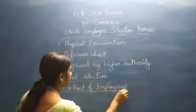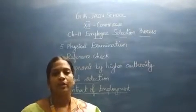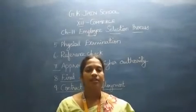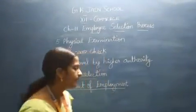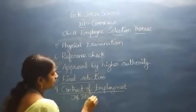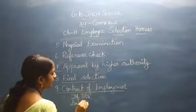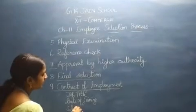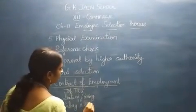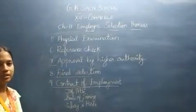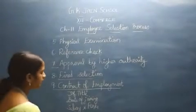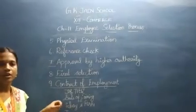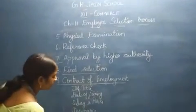The last step in the employee selection process is the contract of employment. The candidate receives an offer letter or job joining letter containing a number of details: the job title, the date of joining, salary and other elements, other benefits and perks such as prerequisites, insurance policies, education fees for children, or other claims. The main roles and responsibilities are also included.